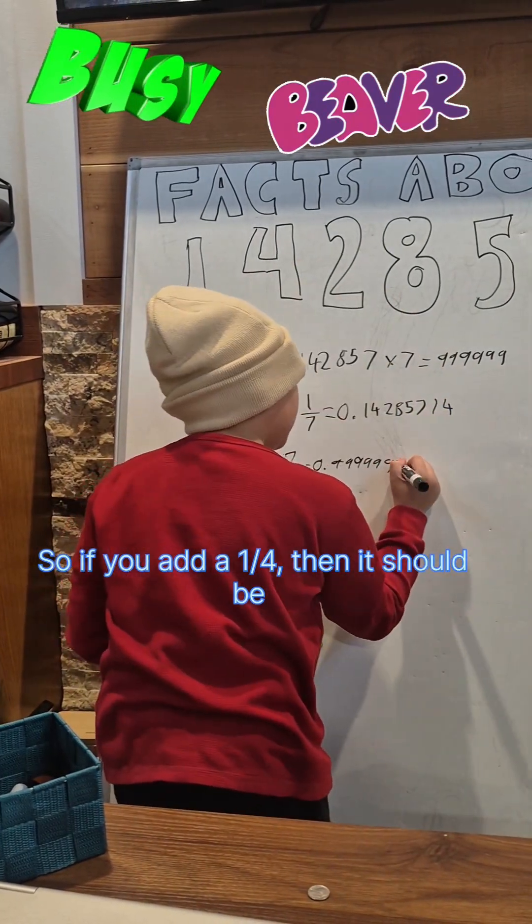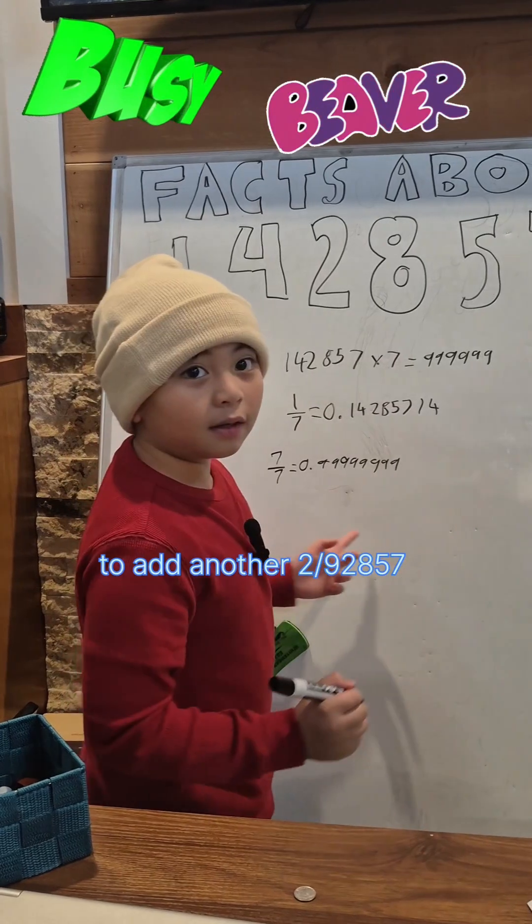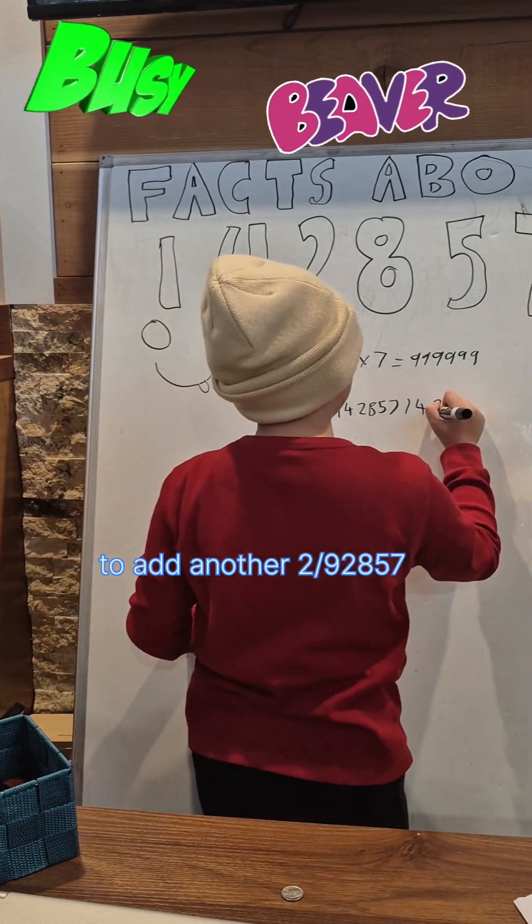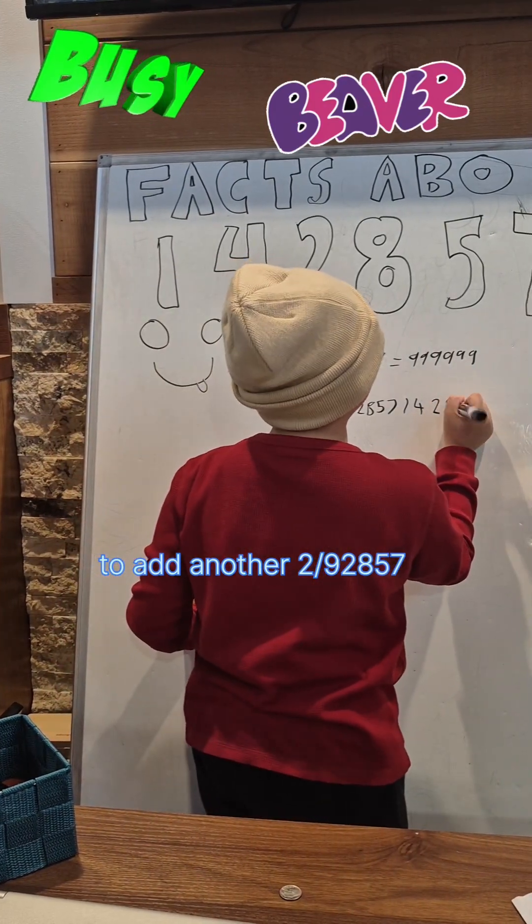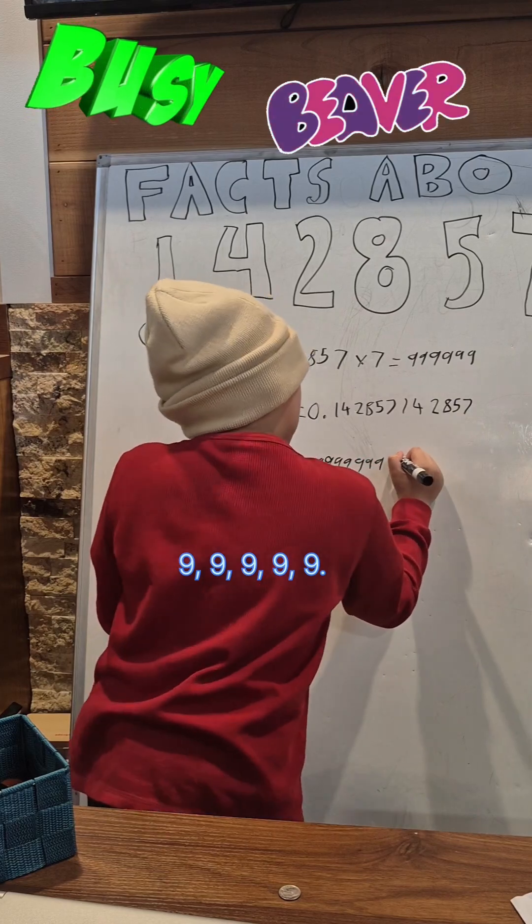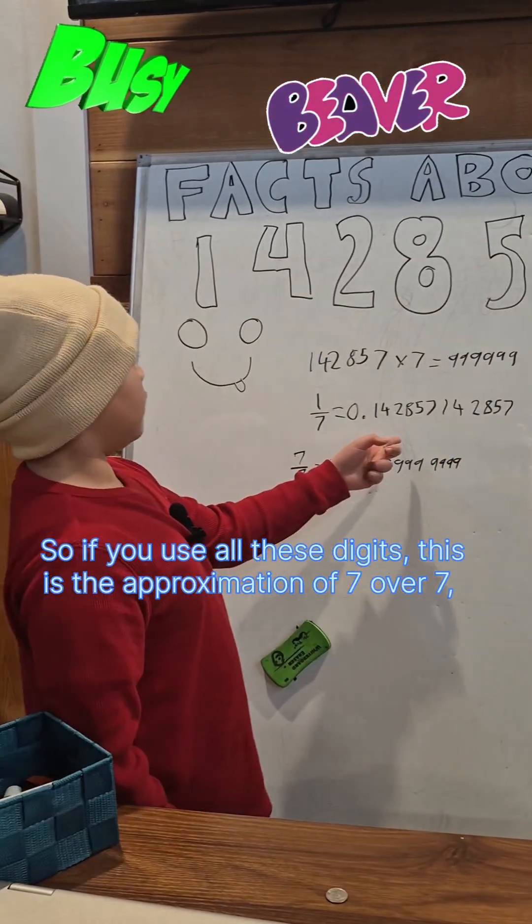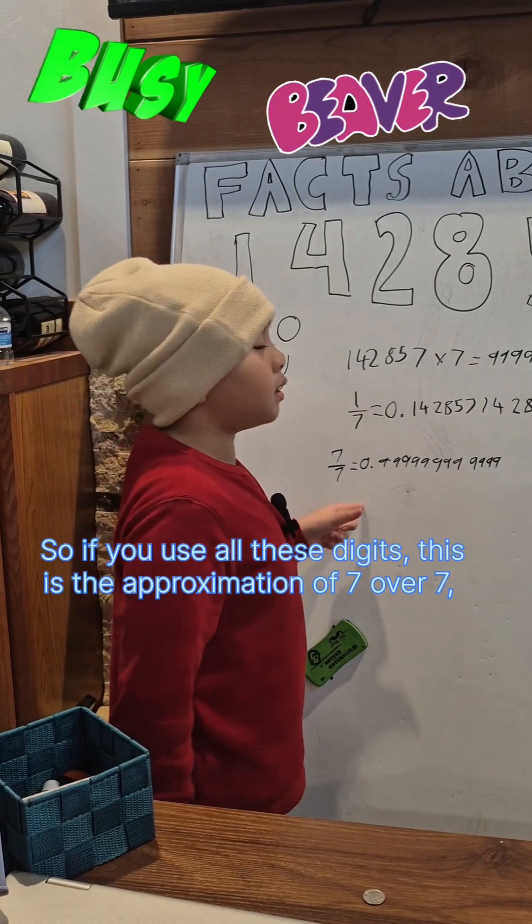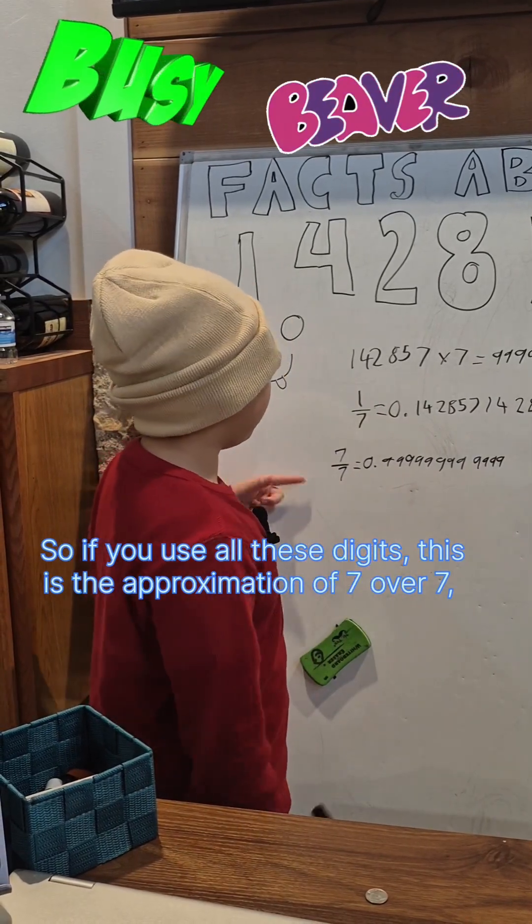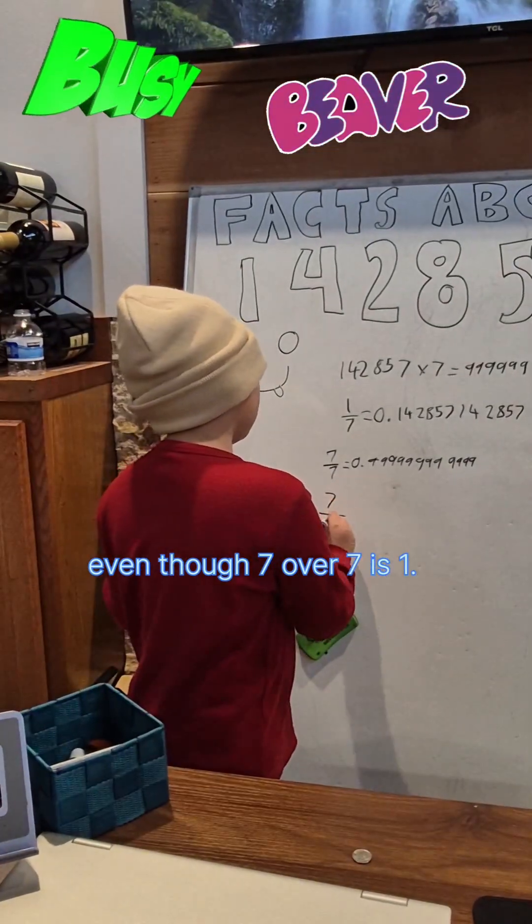over 4, then it should add another two nines, 2857999999. So if you use all these digits, this is the approximation of 7 over 7, even though you know 7